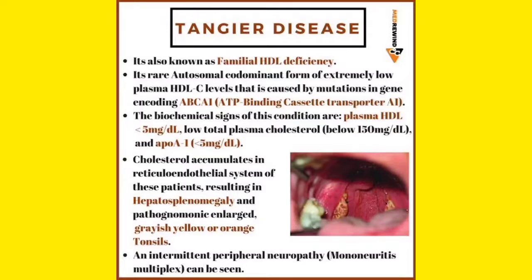Because of cholesterol deposition in the liver and spleen, you will get hepatosplenomegaly in Tangier's disease. Along with that, a very characteristic finding of Tangier's disease is grayish-yellow or orange-colored tonsils. This orange coloration of the tonsil occurs because of the deposition of cholesterol.